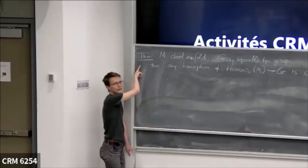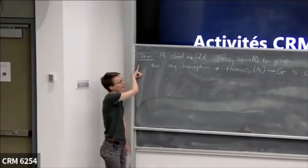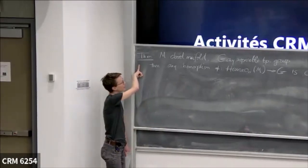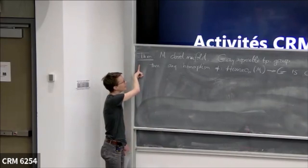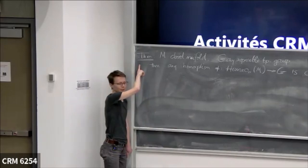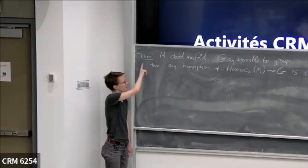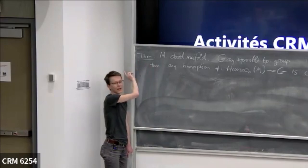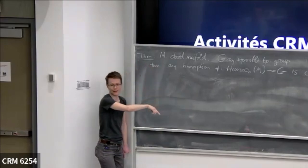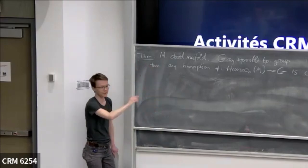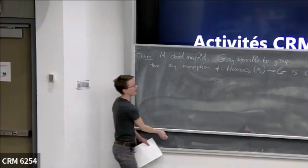This was proved by Rosendahl and Celeste for one-dimensional manifolds, then by Rosendahl for two-dimensional manifolds, and then by subsuming that argument into a general case, it was done for arbitrary manifolds all at once.